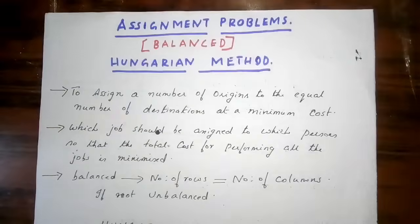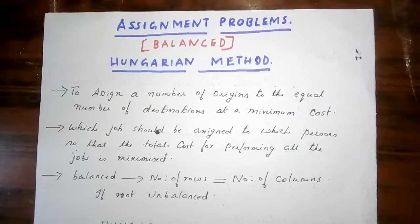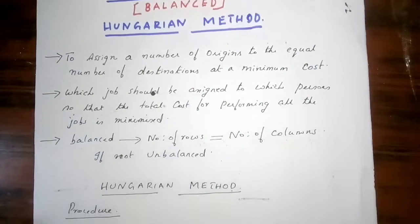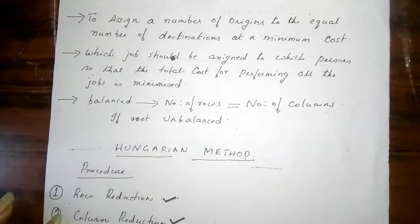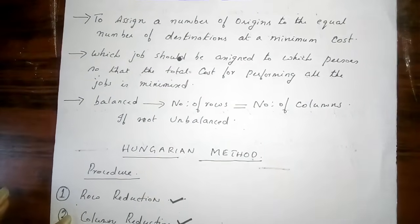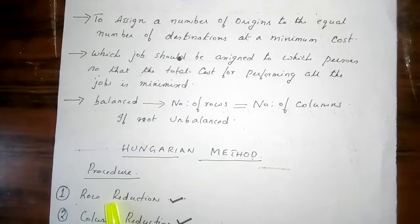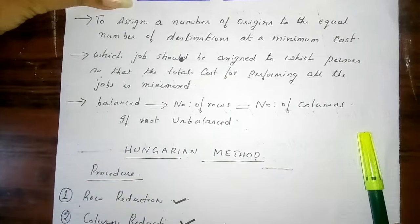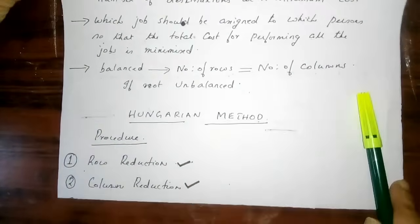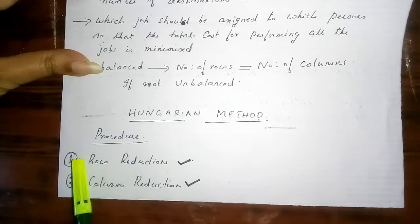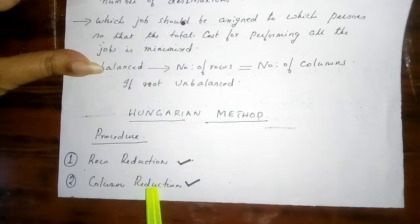Now we will go to the Hungarian method. There are 6 steps. The first step is row reduction. The second step is column reduction.